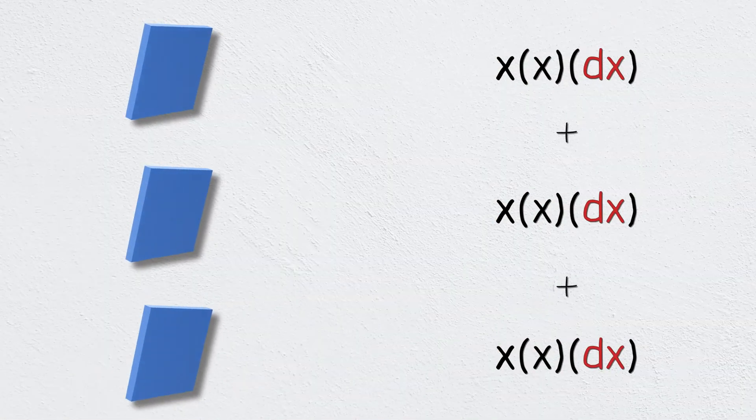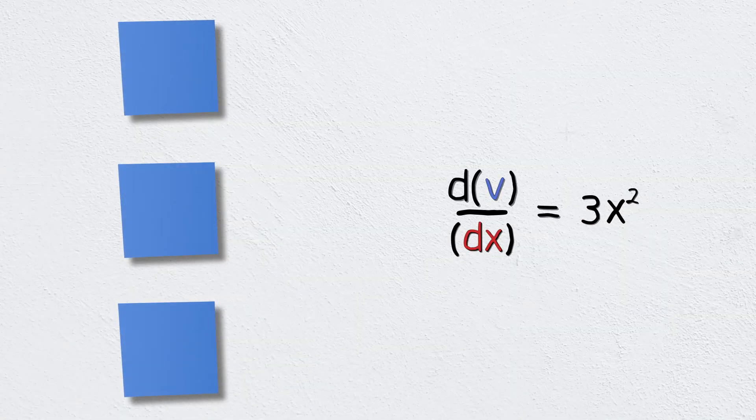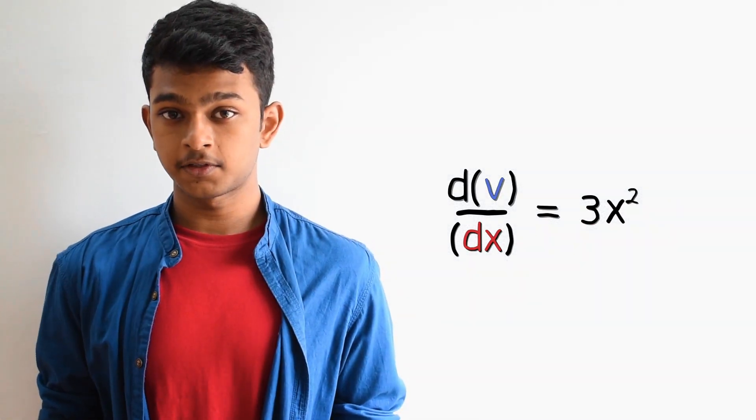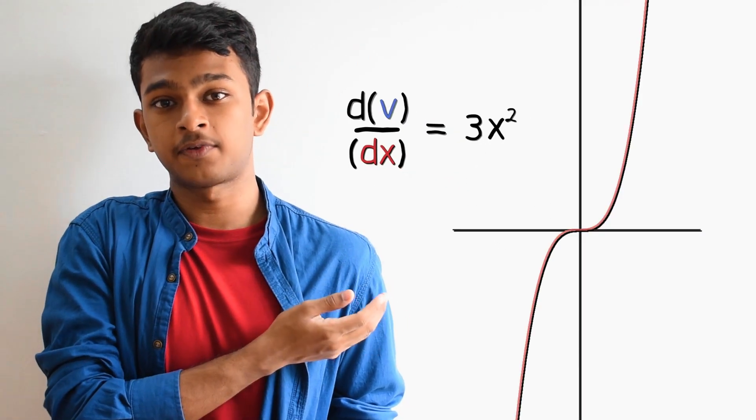On rearranging, we get dv divided by dx equals 3x squared, which again gives the slope for this curve at any point for any value of x.